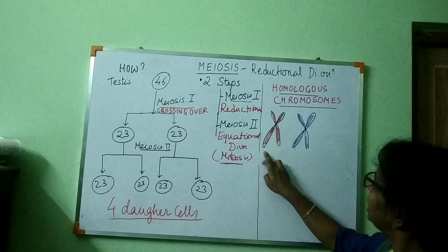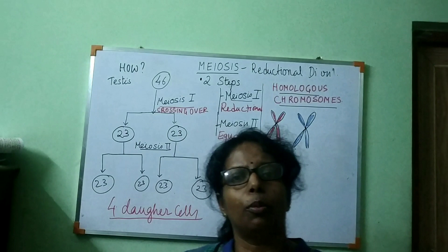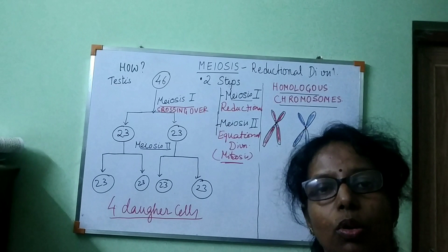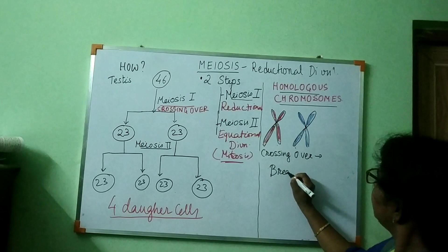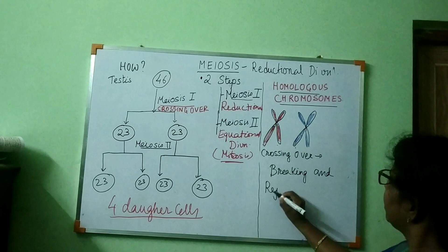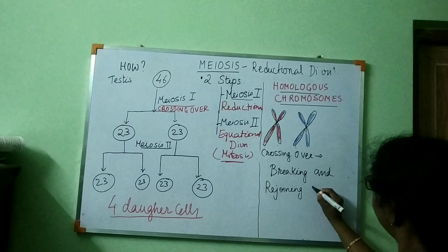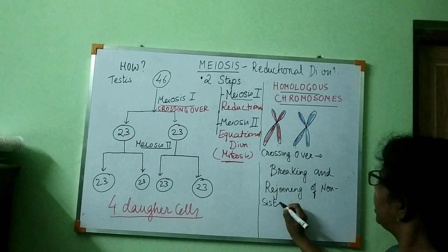In our body there are 23 homologous pairs, and in those 23 pairs there is crossing over taking place. Crossing over means breaking and rejoining of non-sister chromatids of homologous chromosomes. The non-sister chromatids — one red from the father, one blue from the mother — undergo this process during Meiosis I in the reproductive organs such as testes, ovary, or anther.